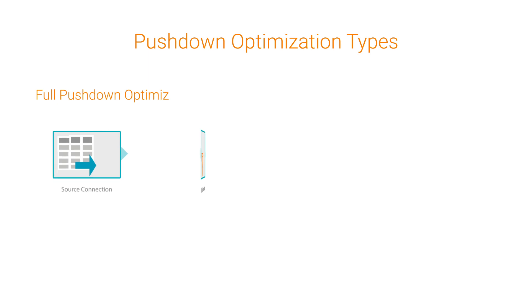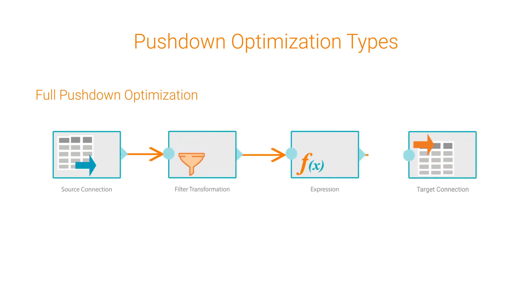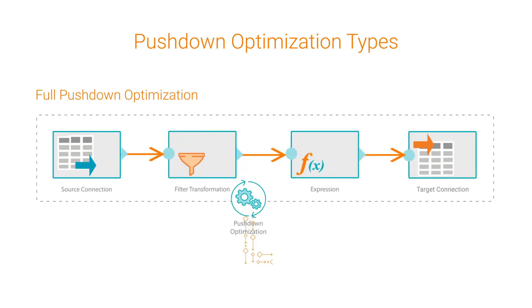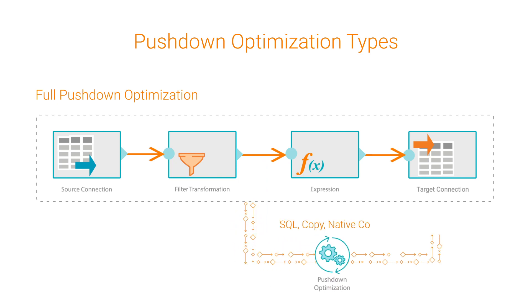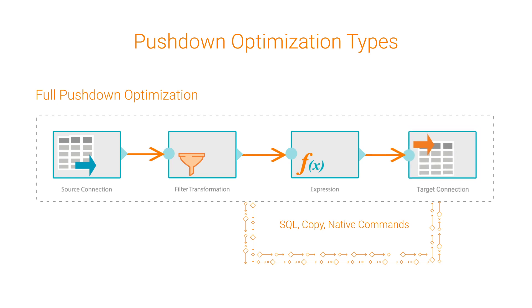With Full Pushdown Optimization, if all the transformations in a mapping are supported, the entire mapping is converted to commands on the endpoint. The connection configured for the mapping target runs the commands.